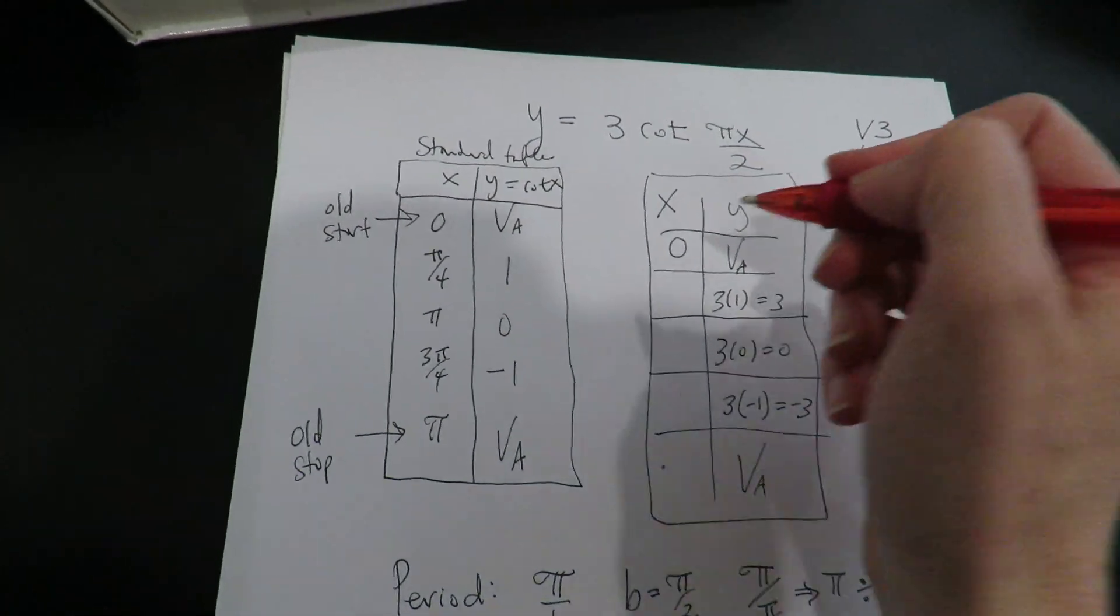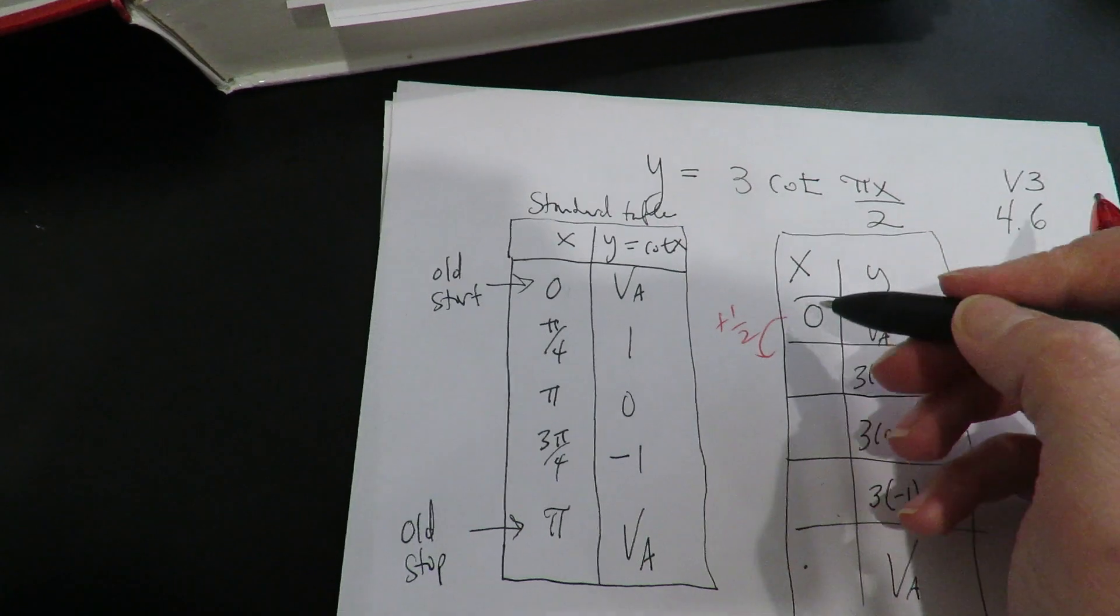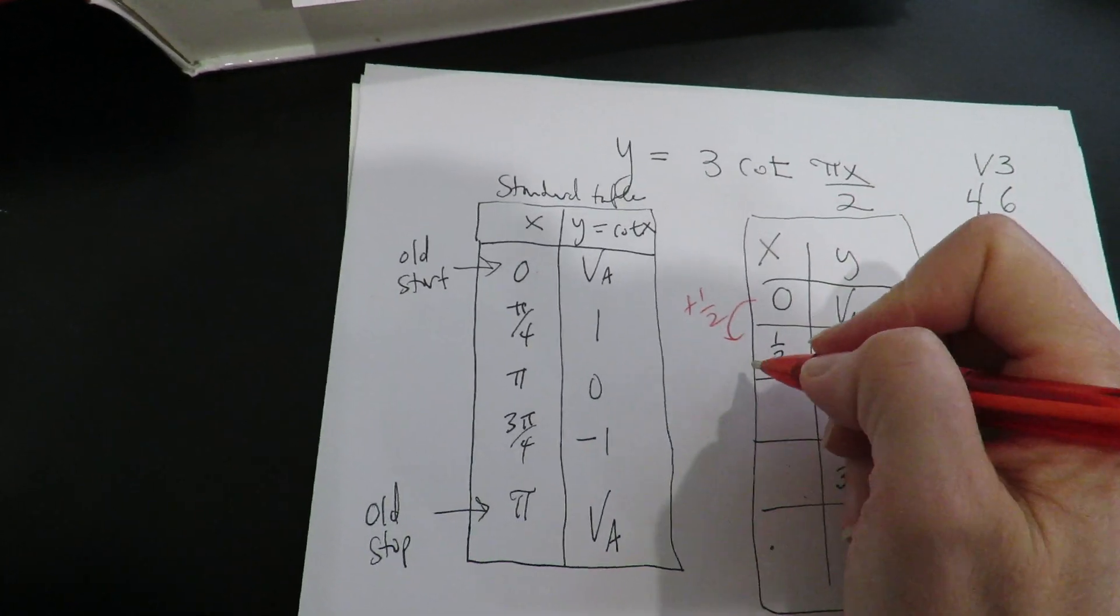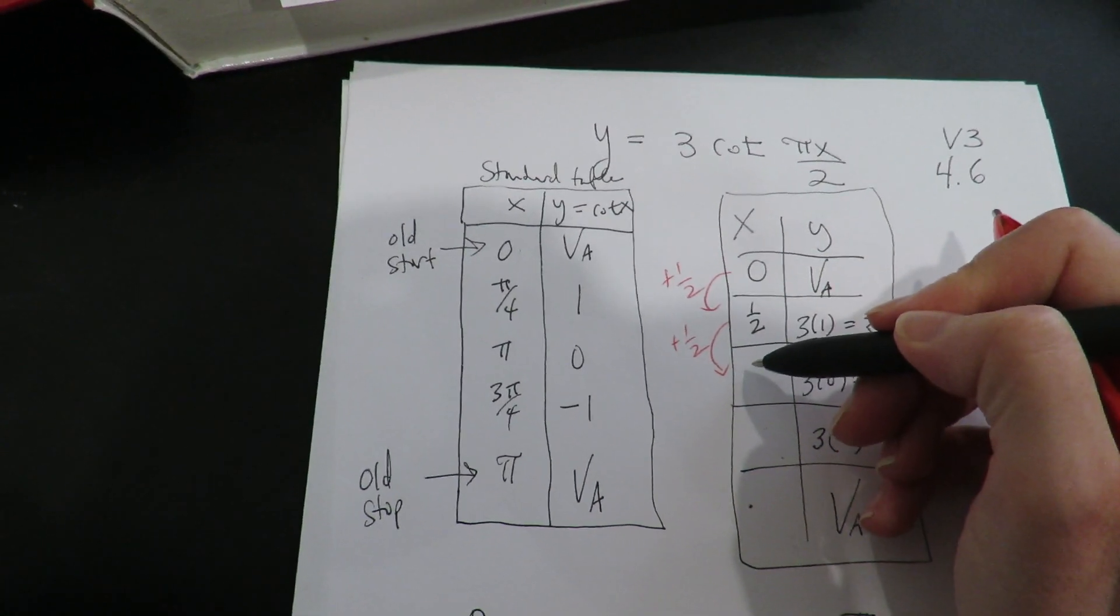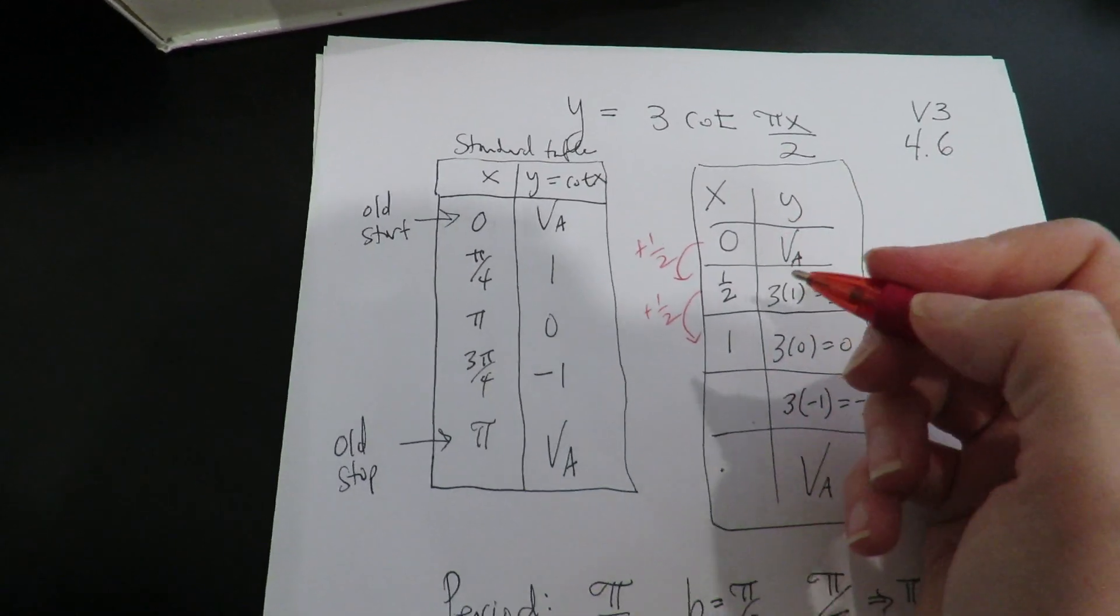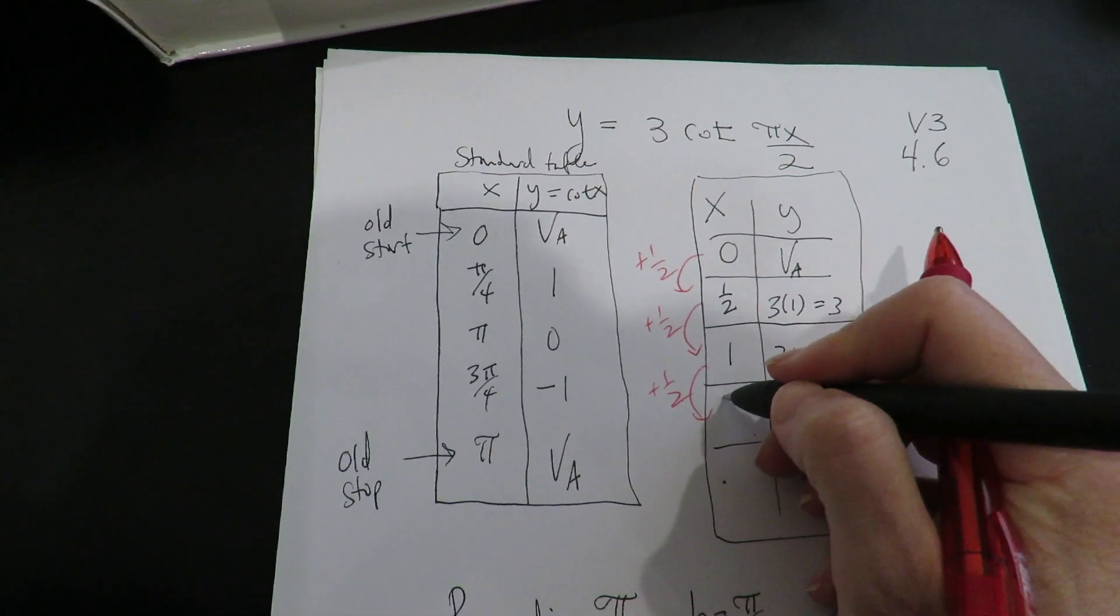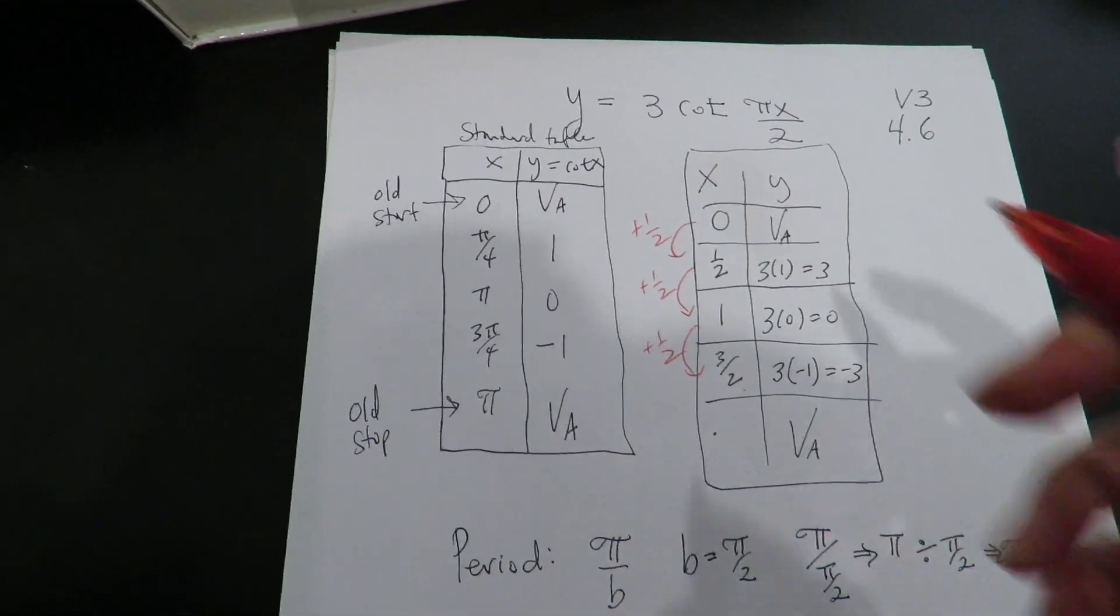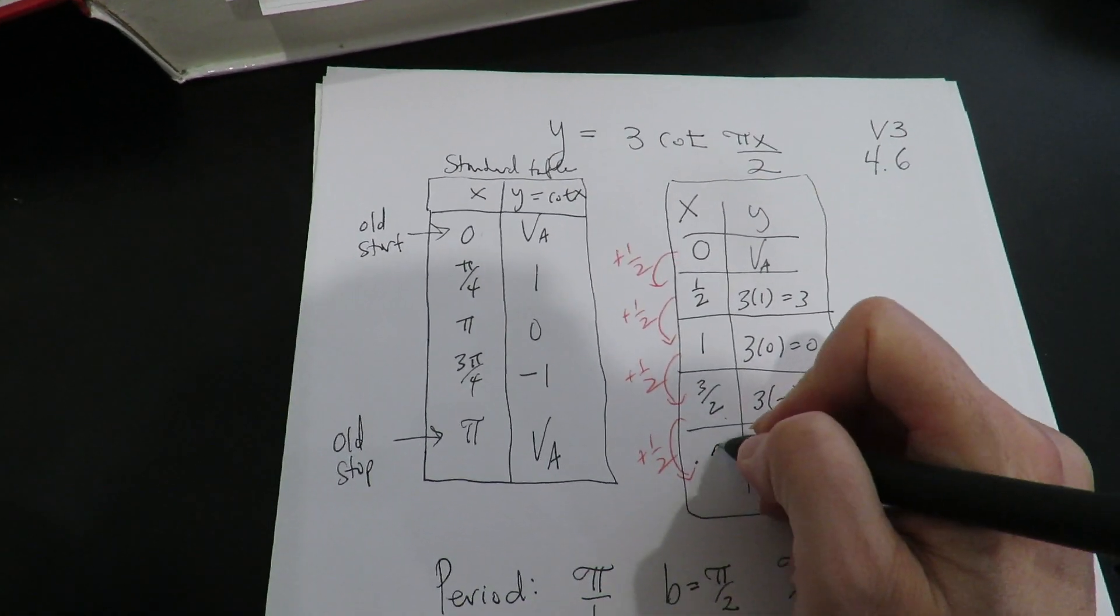So we start at 0. We're going to add the increment. The increment in this case is a half. So 0 plus a half is a half. Then we add a half again. We're going to get 1. We add the increment again. We get 1 and a half. We add the increment again. We get 4 over 2, which is 2.